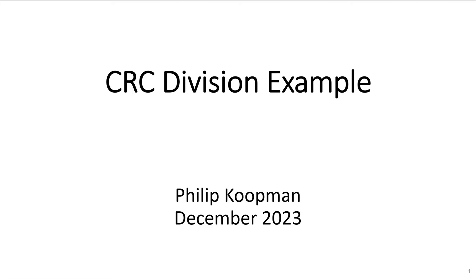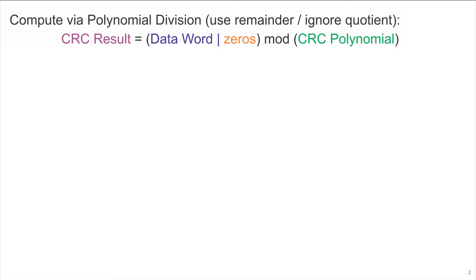This is Phil Koopman, and I'll be working through cyclic redundancy check division examples. To compute a cyclic redundancy check, one takes polynomial division and uses the remainder but ignores the quotient. The CRC result is the data word appended with some zeros mod the CRC polynomial.